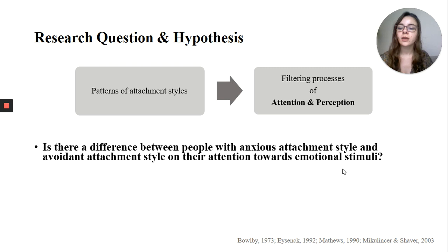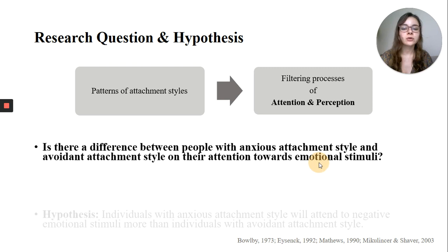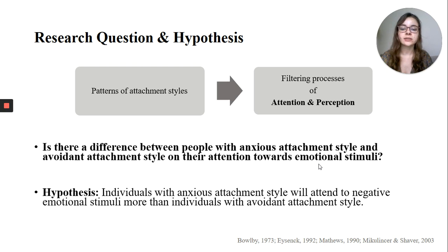There is an agreed attentional bias across different attachment styles, but there is no common consensus on the direction of the attentional bias. It is proposed that selective attention towards negative emotional cues helps people to detect threatening situations and to be alerted. The hypothesis of the study was developed based on this: individuals with anxious attachment style will attend to negative emotional stimuli more than individuals with avoidant attachment style.